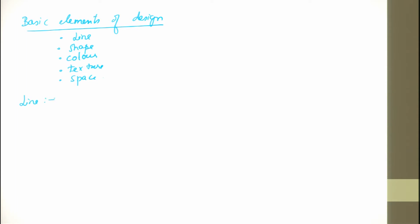Let us see what a line is. A line can be horizontal, vertical, diagonal, zigzag, curved, straight, dotted, bold, or fine. These are all different types of lines used as basic elements of design.